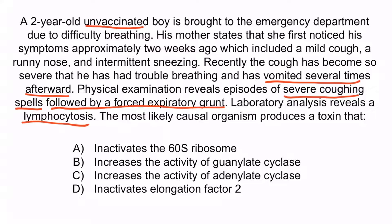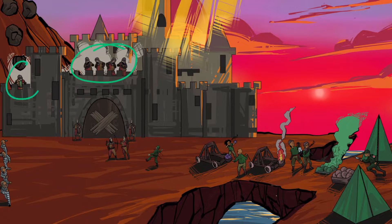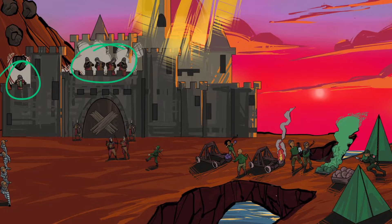The correct answer is C — increases the activity of adenylate cyclase. From the image, the paroxysmal stage is characterized by severe coughing (represented by the guards coughing) and can be associated with post-tussive emesis (represented by the guard vomiting). The tents on the right side of the image help you remember that the pertussis toxin overactivates adenylate cyclase, resulting in increased levels of cyclic AMP. Likewise, the adenylate cyclase toxin also increases levels of cyclic AMP.